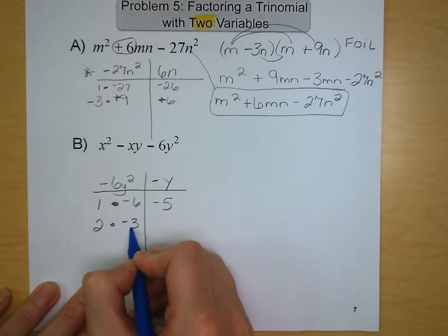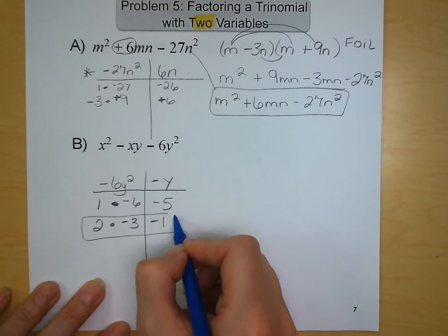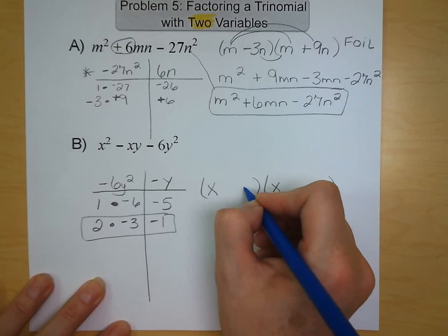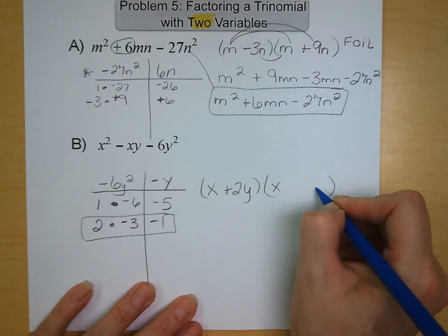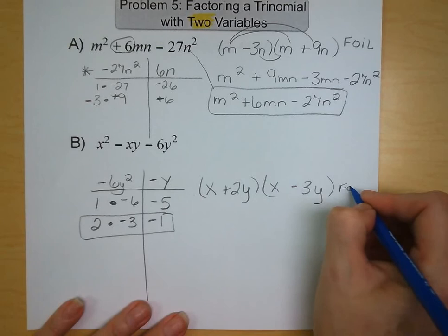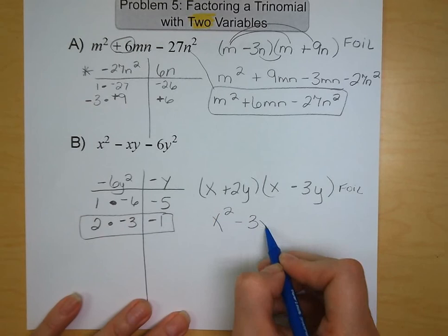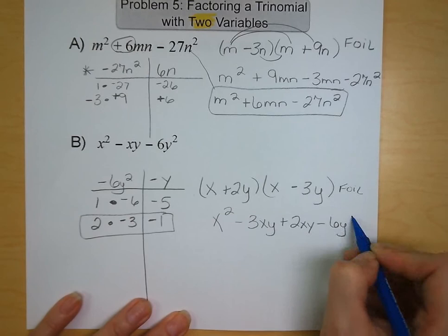So, now we just need to plug these factors into our form. We've got x's to start. We're going to have a +2y and a -3y. And there we go. We're going to FOIL it to double check. x times x is x² - 3xy + 2xy - 6y². x² - xy - 6y². And that's what we started with yet again.